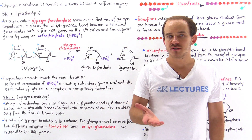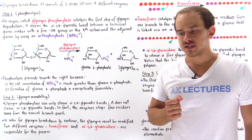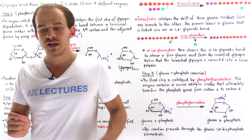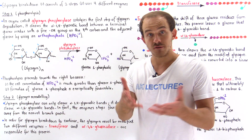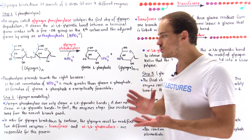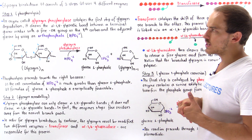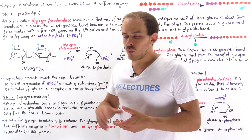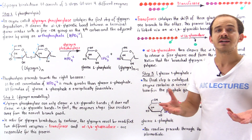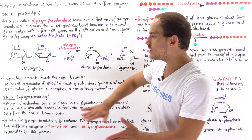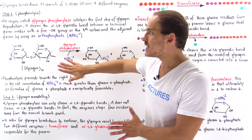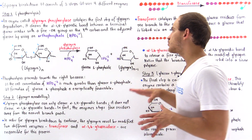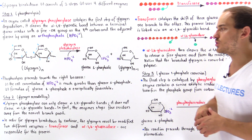Before the cells of our body, such as liver cells or skeletal muscle cells, can actually use their supply of glucose, they have to release the glucose from glycogen. Because inside our body, we store glucose in the form we call glycogen. The question I'd like to address in this lecture is how exactly do we break down glycogen inside the cells of our body? Glycogen breakdown, also known as glycogen degradation, is the process by which we carry out three different steps to release the glucose molecule from glycogen. This process involves four different enzymes.